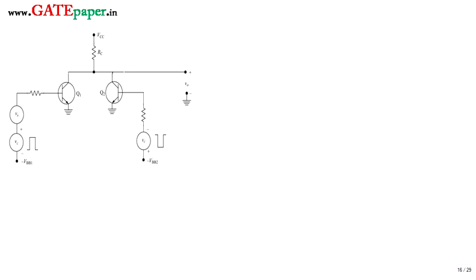Now we discuss the disadvantages of the circuit. First disadvantage: at any instant of time — during both non-transmission and transmission periods — one of the transistors is always in the active region, so a current always flows from Vcc through the collector resistor. Since current always flows, power is continuously dissipated across this resistor, resulting in large heat dissipation. Therefore, power dissipation is maximum.